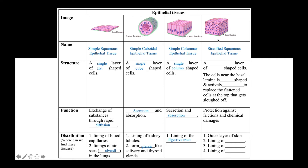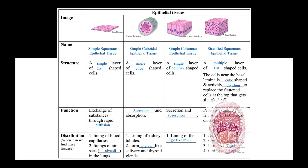Stratified squamous epithelial tissue is made up of multiple layers of flat-shaped cells. The cells near the basal lamina are cube-shaped and actively dividing to replace the flattened cells at the top that get sloughed off. Due to friction, stratified squamous epithelial tissue provides protection against friction and chemical damage. It is commonly found lining the outer layer of skin and other areas prone to friction, such as the oral cavity, anus, and vagina.